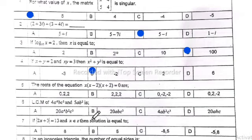Number 5: The roots of the equation x(x - 2)(x + 2) = 0. Setting each factor to zero: x = 0, x - 2 = 0 gives x = 2, and x + 2 = 0 gives x = -2. So the roots are 0, 2, and -2. Option D is correct.